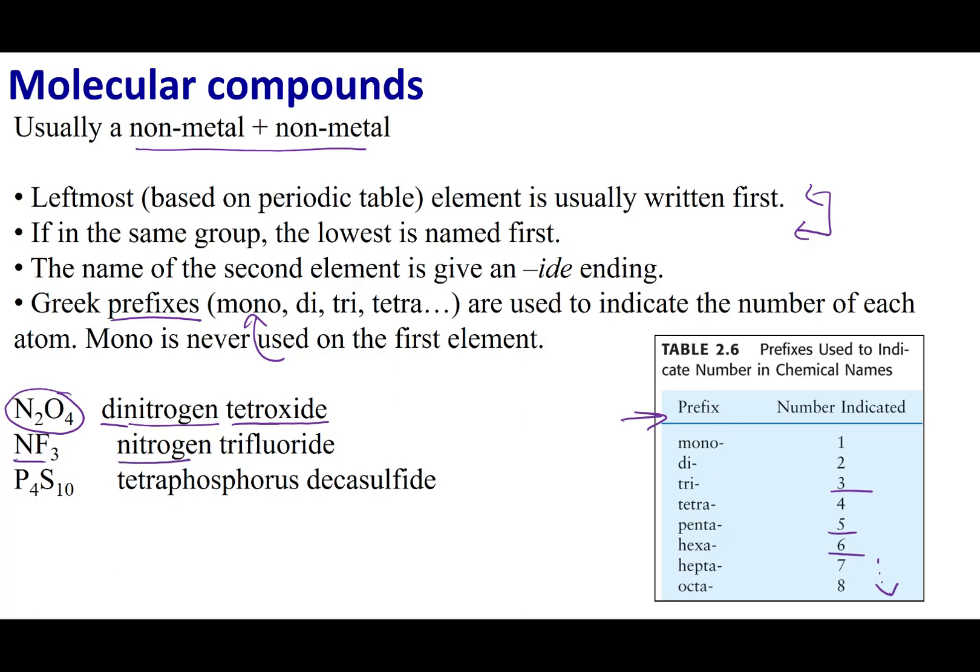So again, we have nitrogen coming first and then fluorine is the second element, so it's going to be fluoride. Now since there's one nitrogen here, I'm not going to put mono because it appears first. However, there are three fluorides, so this is going to be trifluoride - so nitrogen trifluoride.